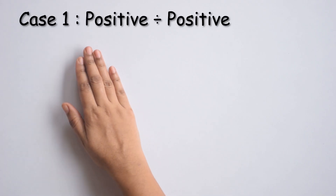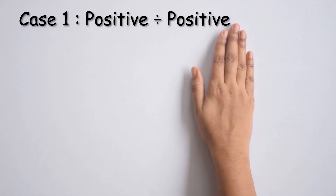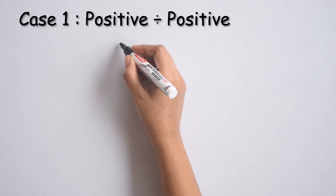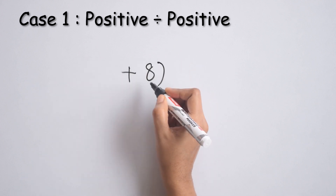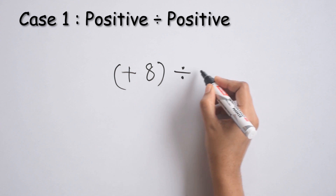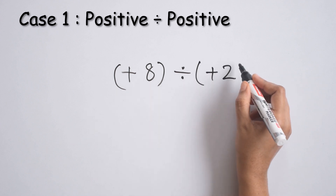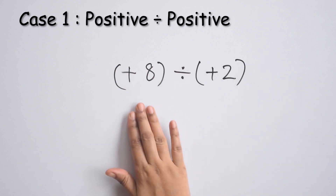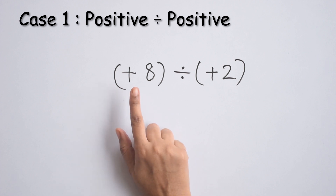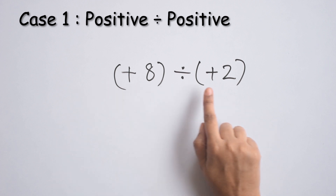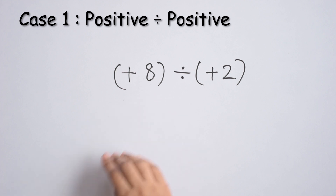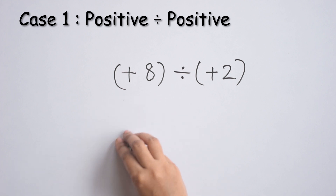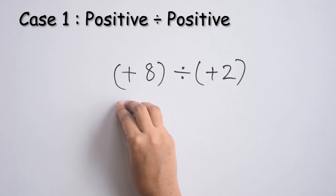Let's take the four cases. Case 1 is positive integer divided by positive integer. For example, if we take positive 8 divided by positive 2. We can read this as positive 8 divided into 2 groups. We are representing positive integers using green peas, so let's represent positive 8 using 8 green peas.